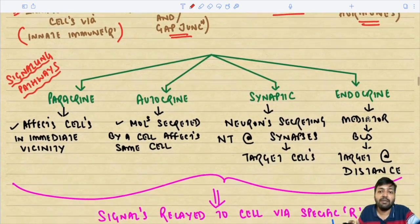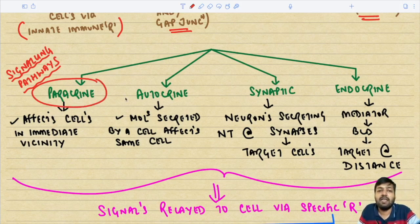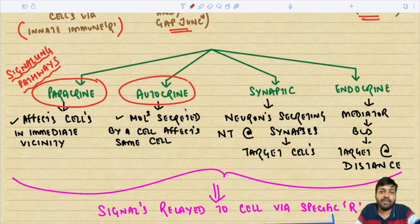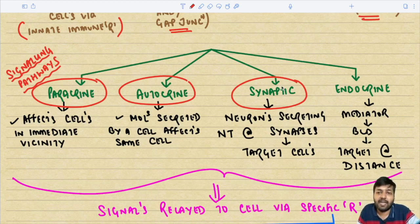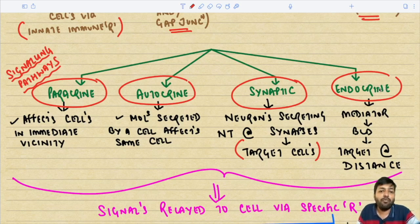The different signaling pathways can be paracrine - where one cell releases signals affecting only nearby cells; autocrine - where a molecule secreted by a cell affects that same cell; synaptic - where neurons secrete neurotransmitters at synapses between electrically charged cells acting on the target cell; and endocrine - where a mediator is released into the blood acting on a target present at a distance. These are the four important types of signaling.